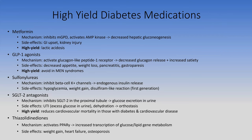Sulfonylureas—like glimepiride—cause endogenous insulin release, almost acting like an insulin medication, but are much harder to control. They continue releasing insulin even when glucose is low, causing hypoglycemia. They also cause weight gain because insulin is anabolic. First-generation sulfonylureas can cause a disulfiram-like reaction with alcohol.